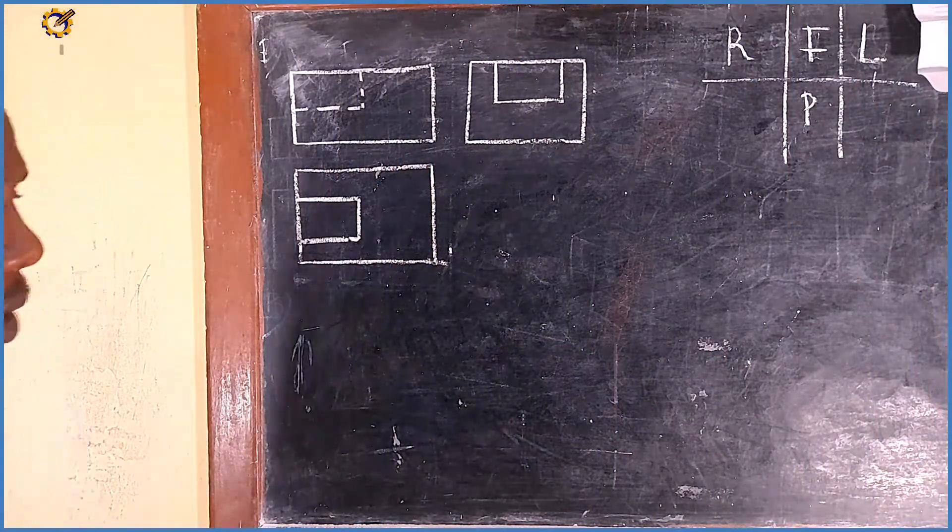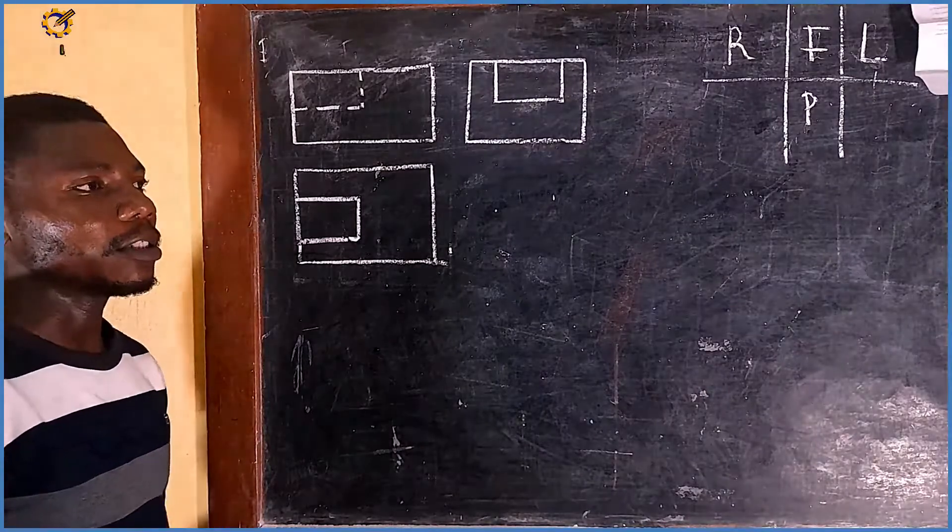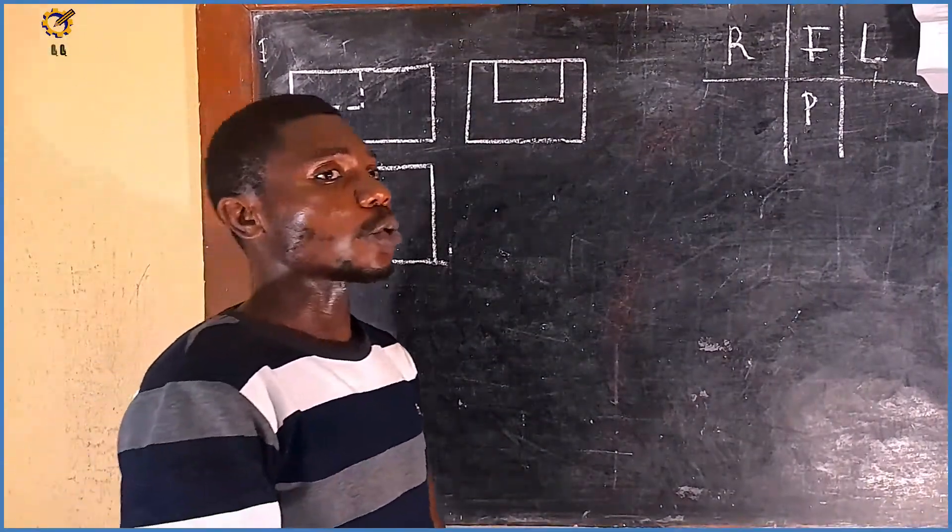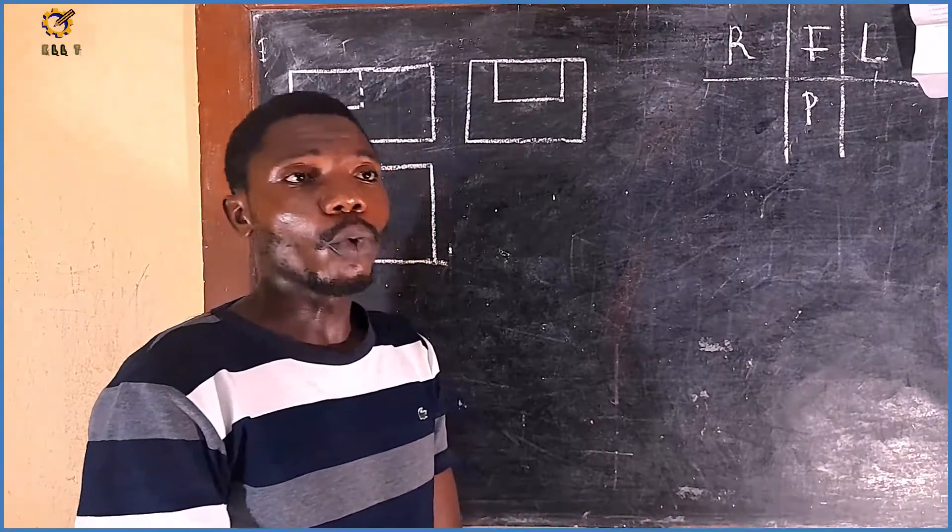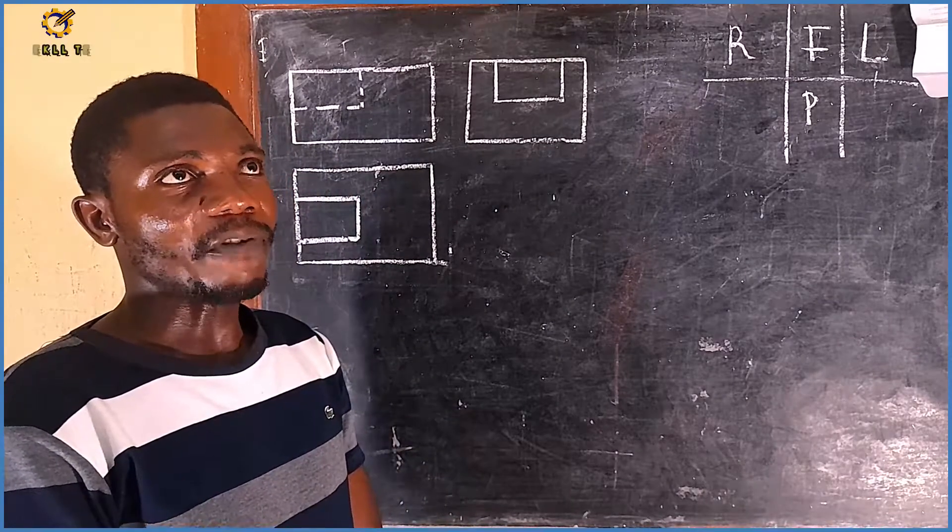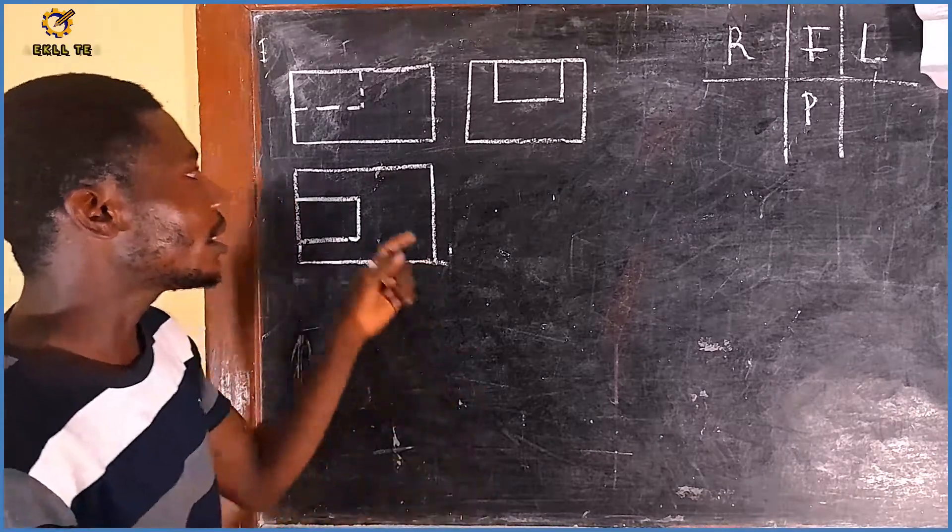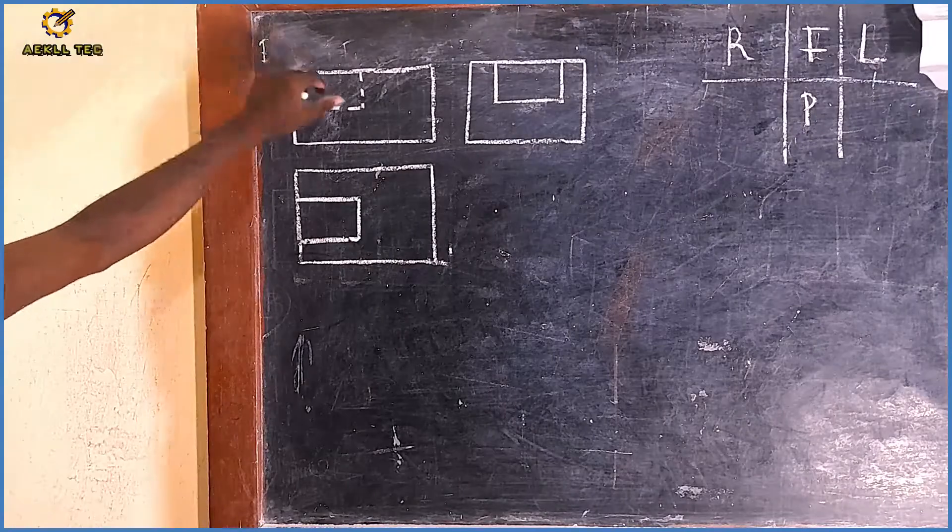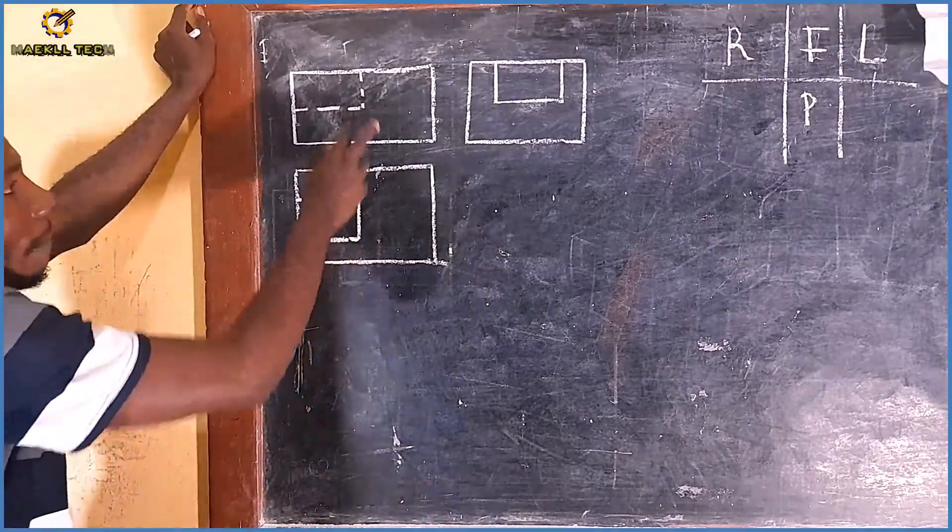Good day and welcome to the fifth episode of this concept of conversion from orthographic projection to isometric projection. My name remains Onwutobe Blessed Olalekun, the founder of Michael Tech. So considering this problem as displayed on the screen, it is also in a first angle. This is my front view, my plan and my end view.